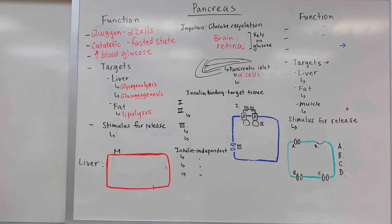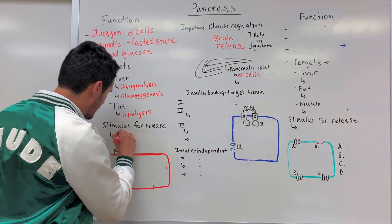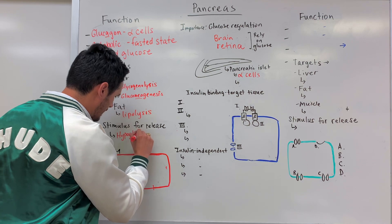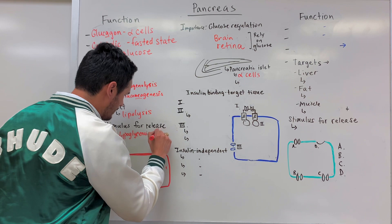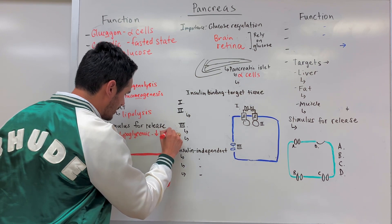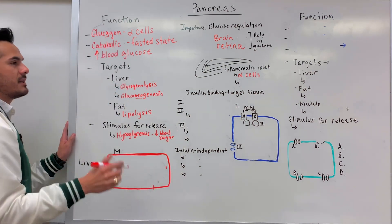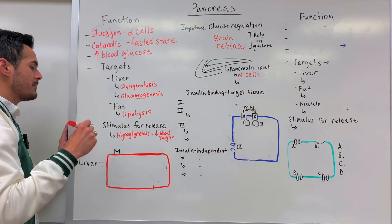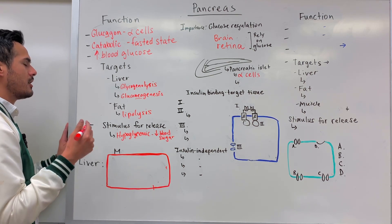What stimulates the release of glucagon? Glucagon is going to be released whenever we are hypoglycemic, meaning we have low blood sugar — so we've got to increase it if it's low. We stimulate the release of glucagon from those alpha cells within the pancreas, and it gets into the blood.